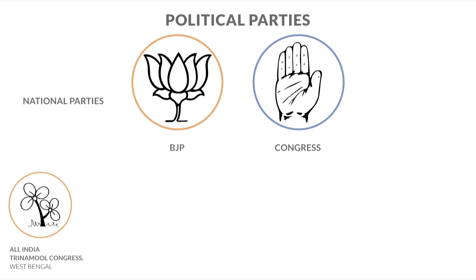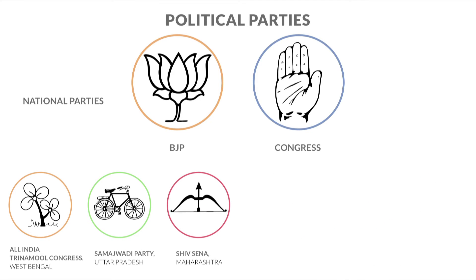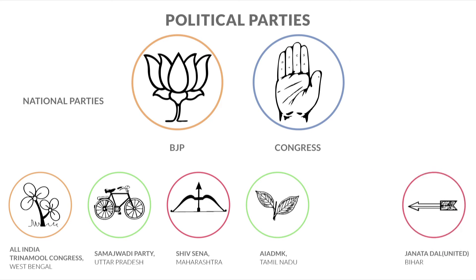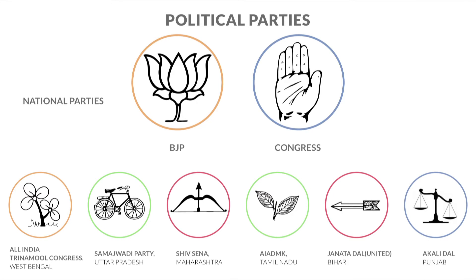For example, the All India Trinamool Congress is very strong in West Bengal. The Samajwadi Party in Uttar Pradesh is very strong and currently ruling the state. The previous government there was the Bahujan Samaj Party. The Shiv Sena is a very strong party in Maharashtra. The AIADMK in Tamil Nadu, the Janata Dal (United) in Bihar, and the Akali Dal in Punjab, to name a few.